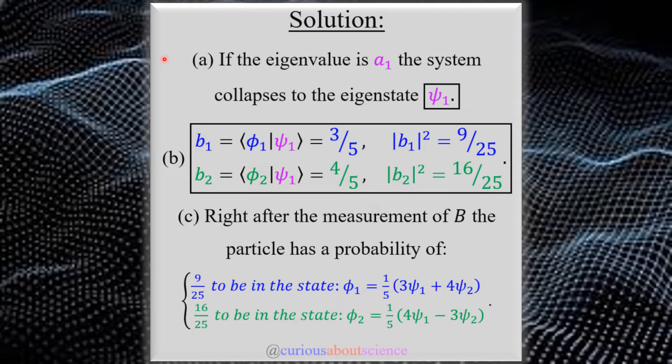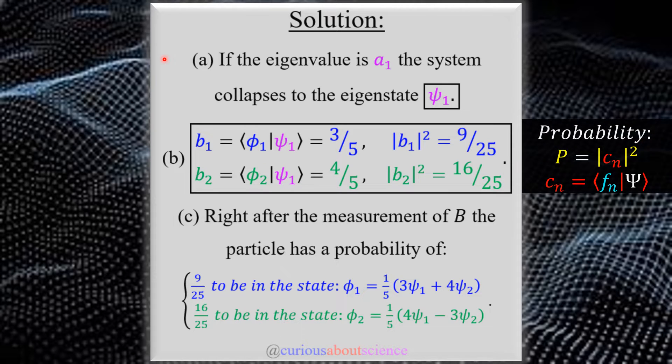Now, for part B, we have to recall something, mainly what the probability here would represent in these bases and with all this other stuff that we've learned in this chapter. But since we know what the eigenstate is, right after the fact that we measured it, we know that we're in eigenstate psi 1.